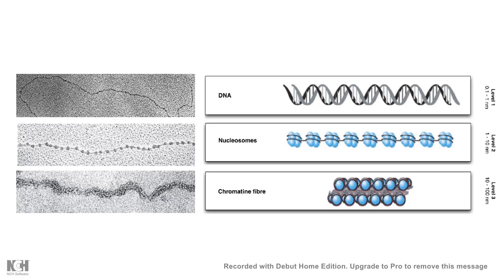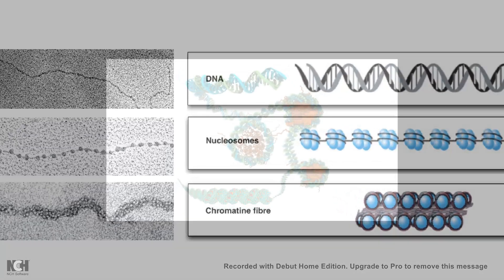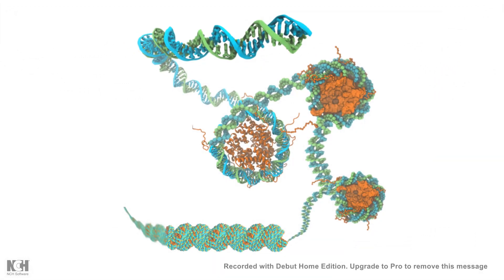The DNA is compacted at several levels. The first level is bare DNA, which appears as a 0.1–1 nanometer structure in micrographs. The nucleosome represents a second level of compaction, forming a 1–10 nanometer fiber. Higher-order compaction produces a chromatin fiber, and with increasing complexity and compaction, the chromosome progressively loses its ability to transcribe and give rise to functional mRNAs.